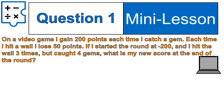Our first word problem has to do with video games. On a video game, I gain 200 points each time I catch a gem, but each time I hit a wall, I lose 50 points. If I start the round at negative 200, I hit the wall three times, but I caught four gems, what's the new score at the end of the round? Try to figure that out and see if you could solve this problem and figure out how many points you would have at the end of the round.